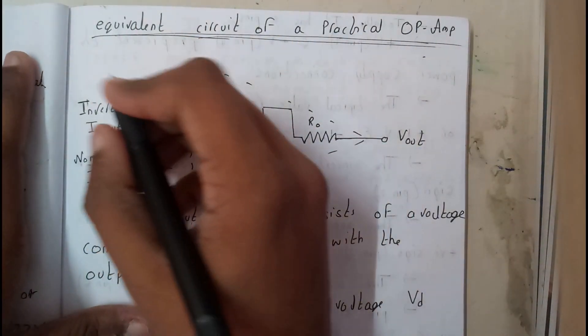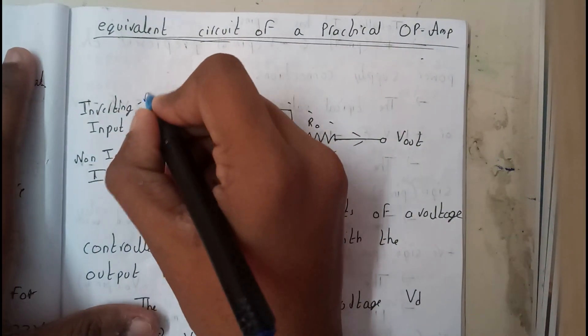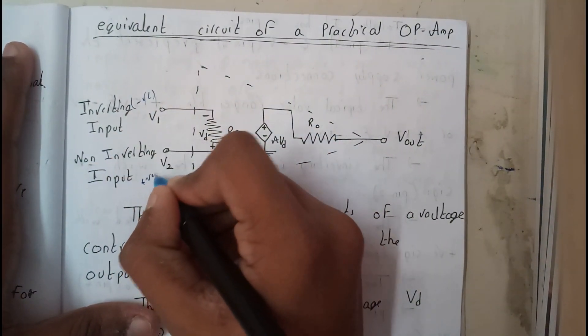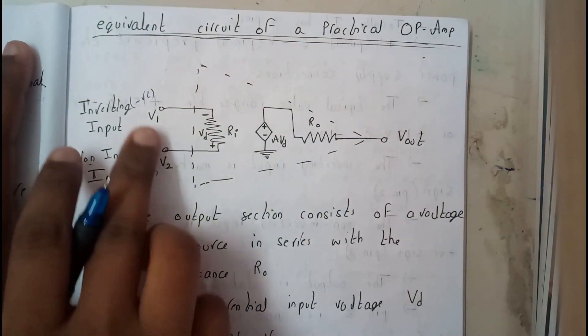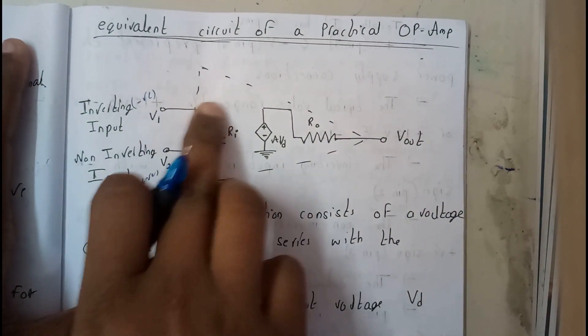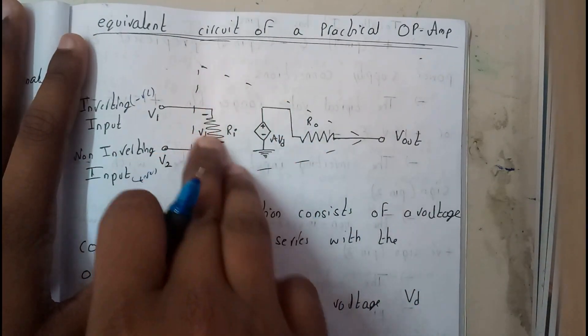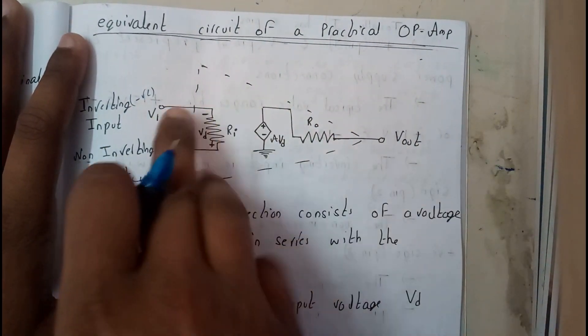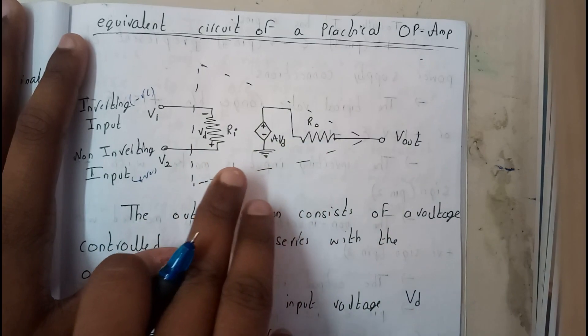Inverting terminal will be V1, remember whenever you write inverting terminal, write the sign. So write the sign V1 and V2, we will be connecting them with a resistor that is VD, this is the internal connection. We have just drawn a triangle, two inputs and one output.